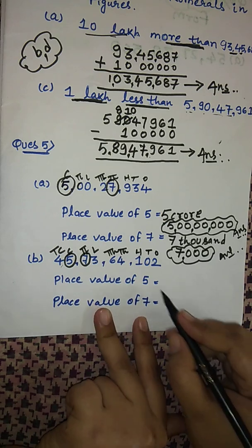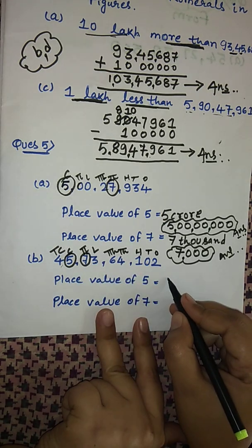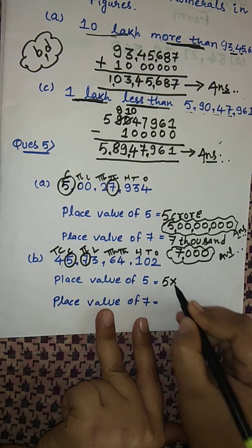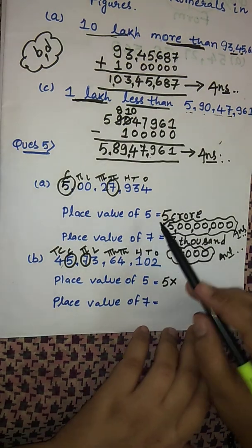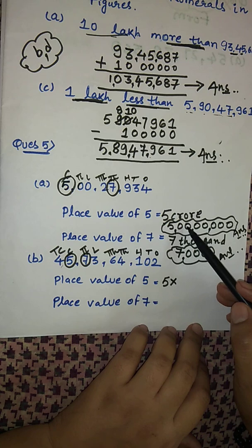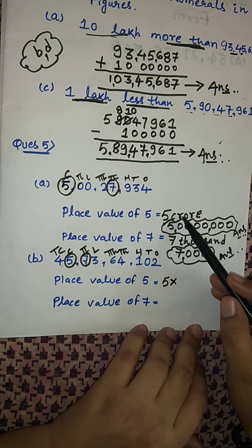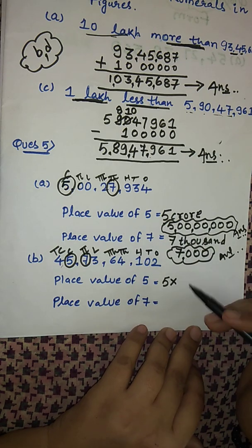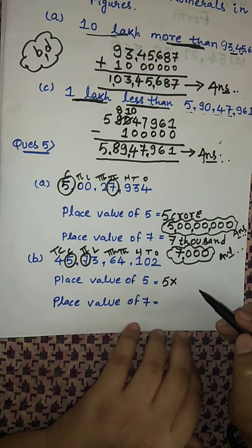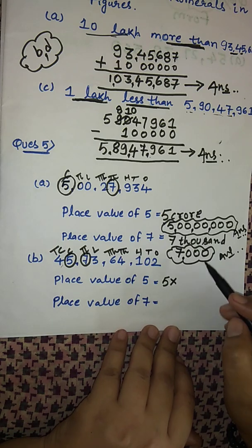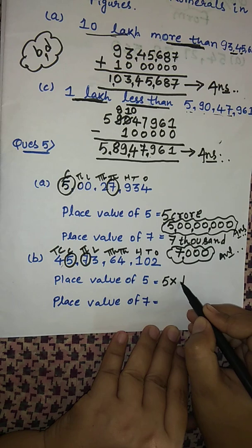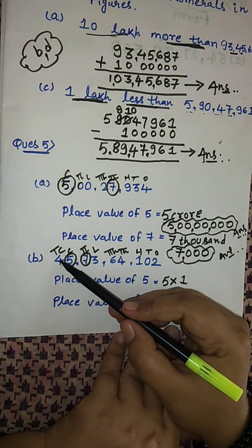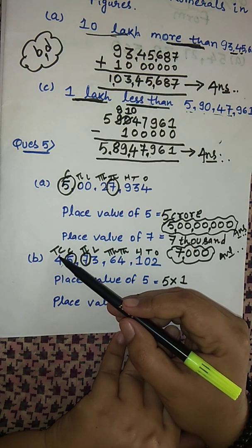The place value of 5 will be 5 crores. I am also showing you the multiplication method: the crores place has a value of 1 crore, and ten crores place has a value of 10 crores. Similarly, ten lakhs place has a value of 10 lakhs.